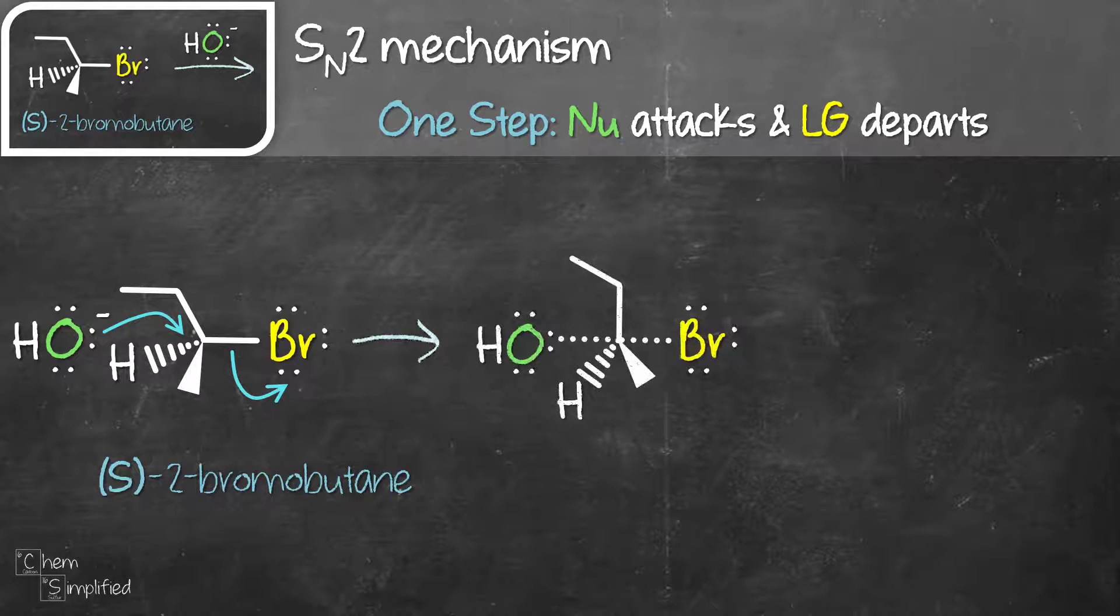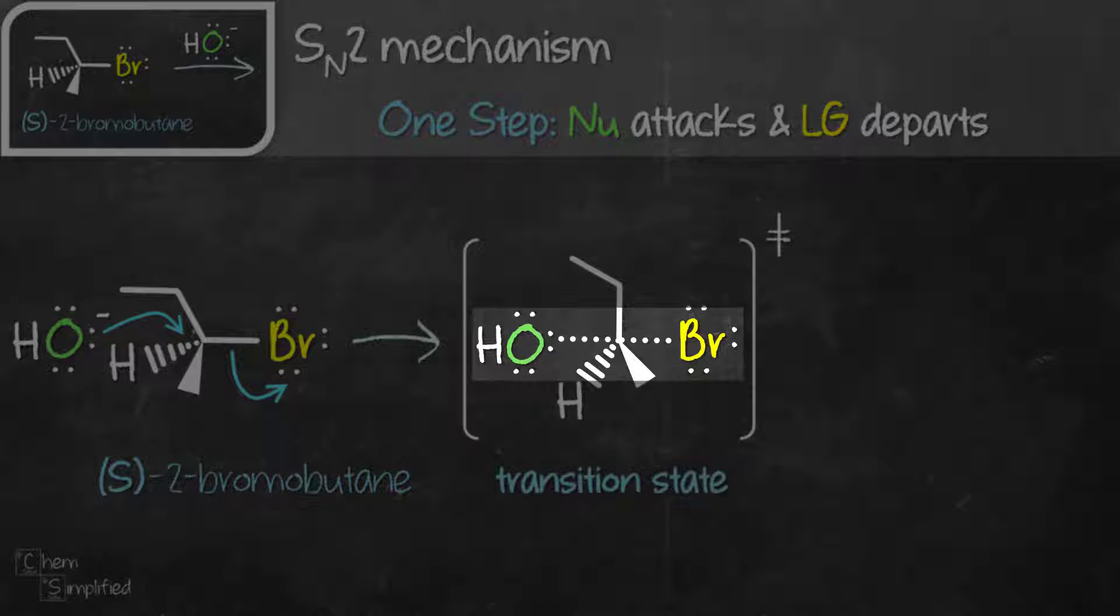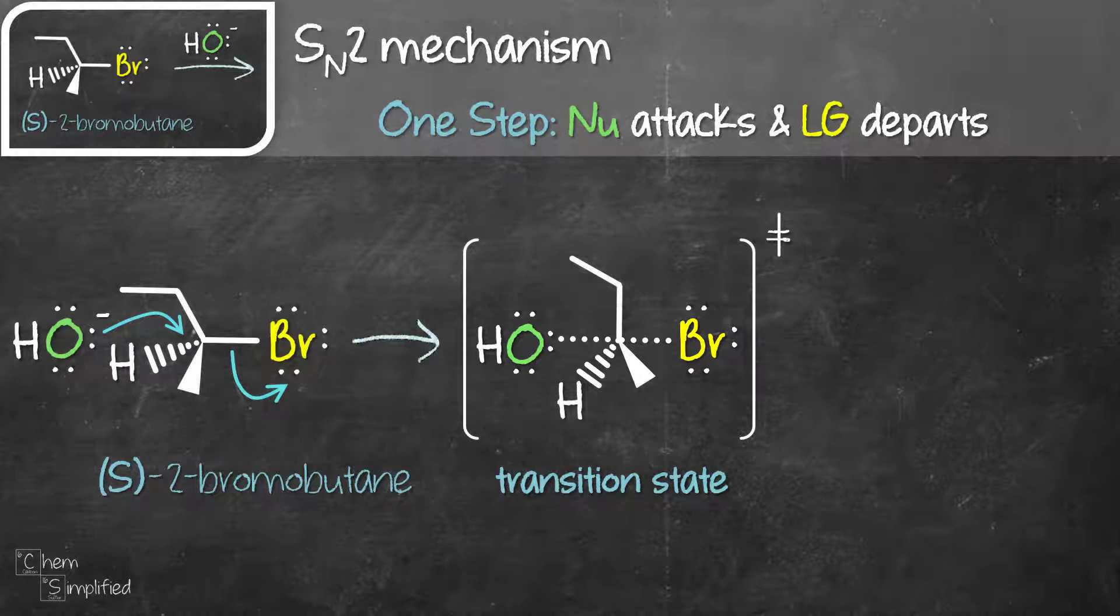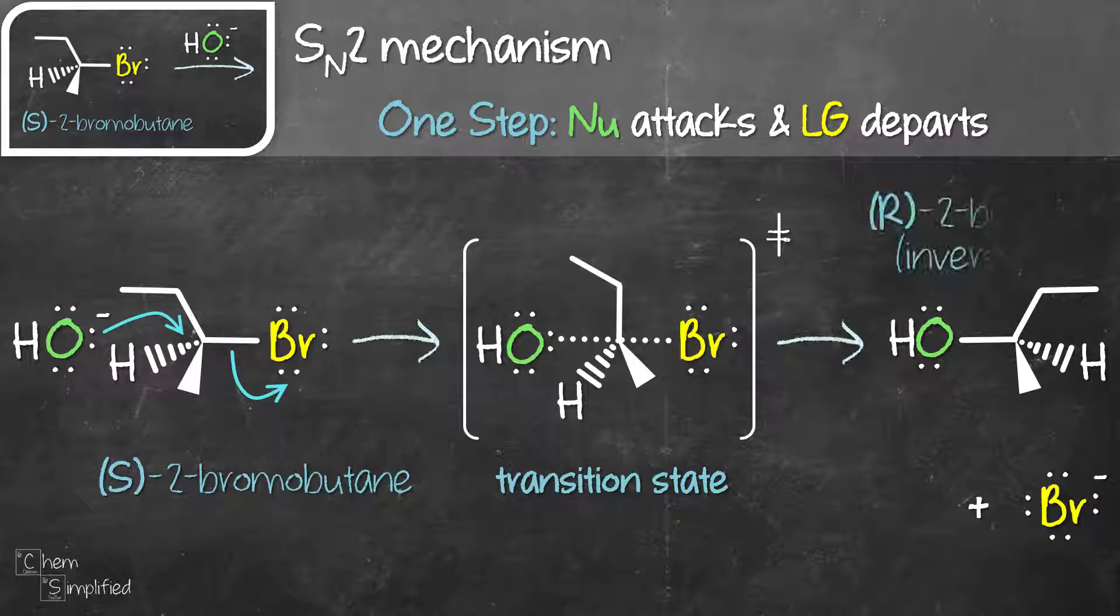We can see the partial bond between oxygen and carbon forming and a partial bond between carbon and bromine breaking. This is called the transition state, shown in a bracket and a double dagger on the top. The product that we get in this example is R-2-butanol.